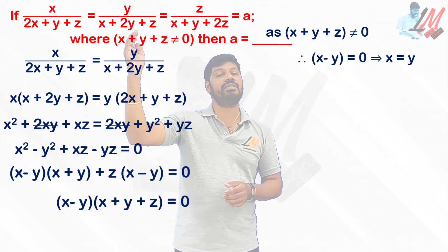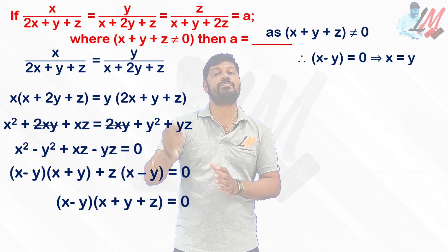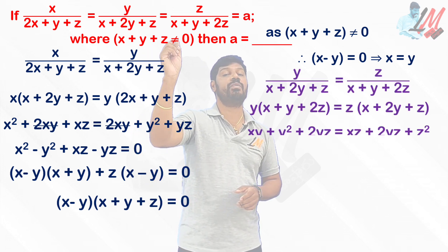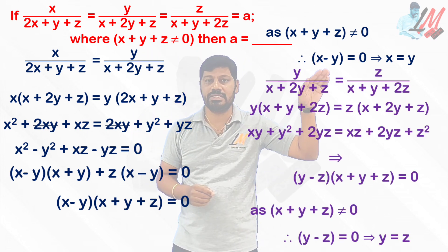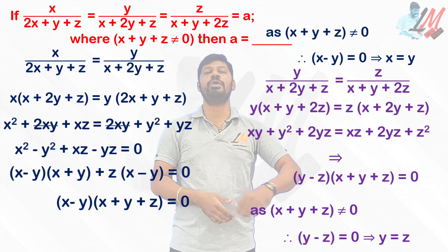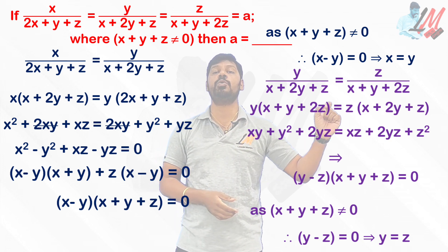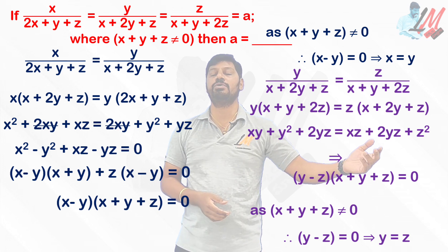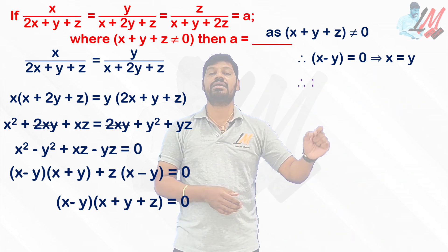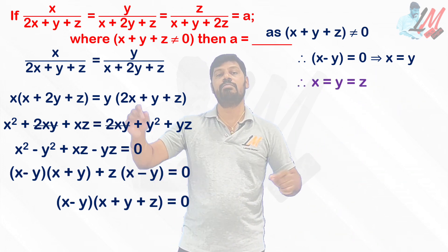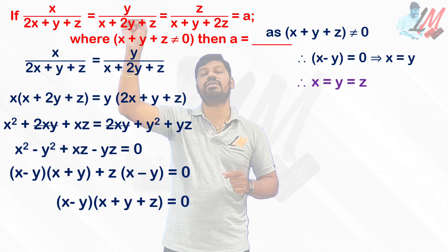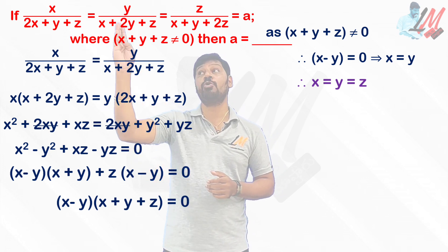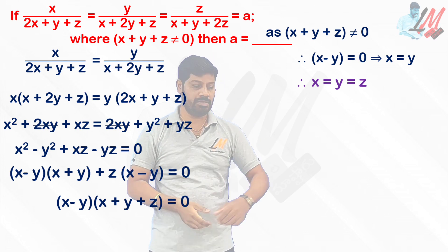Similarly, taking the second and third expressions — y/(x+2y+z) = z/(x+y+2z) — and doing the same calculation, we get y = z. So we have x = y from the first pair and y = z from the second pair. On the whole, using all three relations, we can conclude x = y = z.